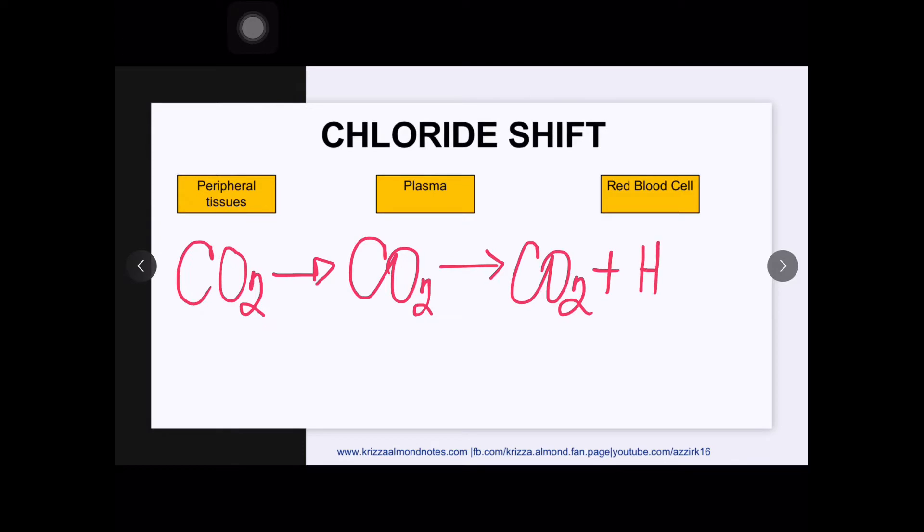Carbon dioxide in the red blood cell will be combined with water to form carbonic acid and this is going to be catalyzed by the enzyme known as carbonic anhydrase found on the red blood cell membrane.